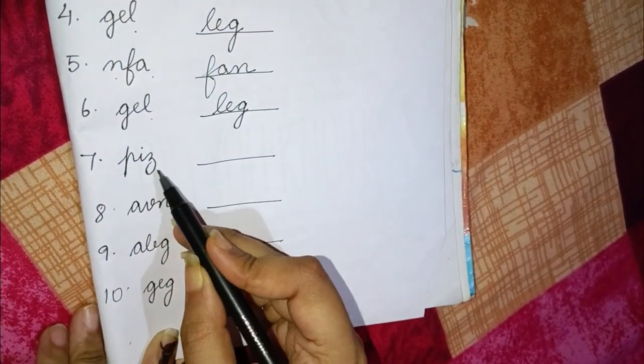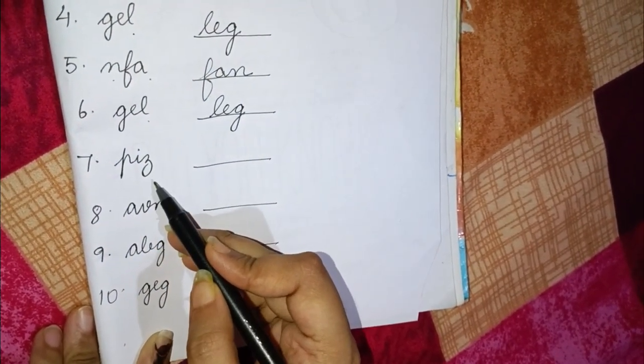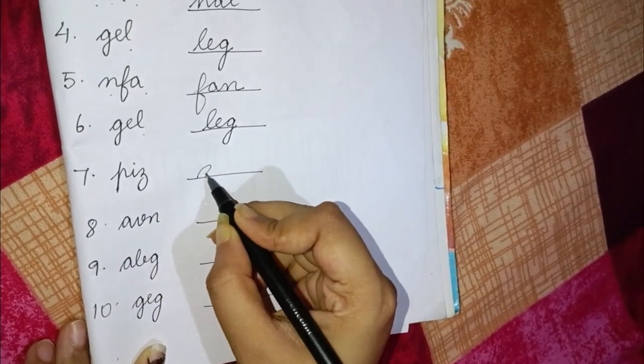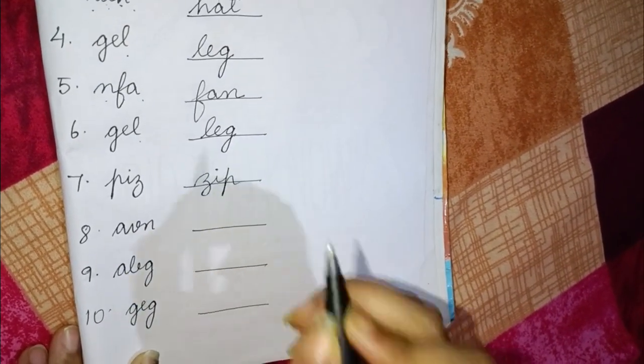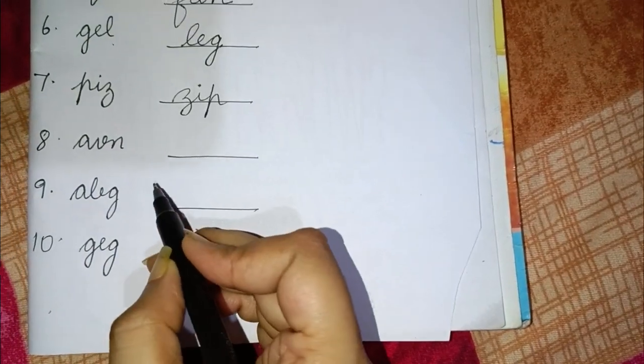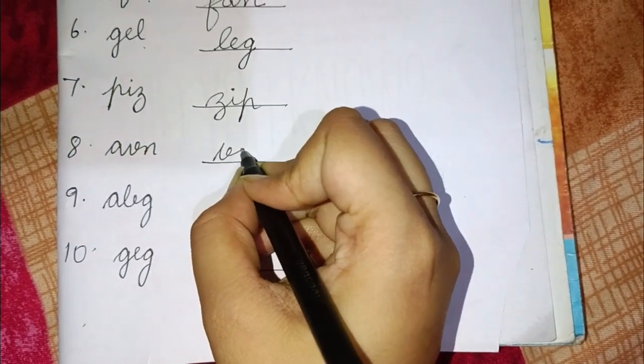Next is P I Z. This is also a wrong word. Correct word will be Z I P zip. Now the next word is A B N. This is also wrong word. Correct word will be V A N van.